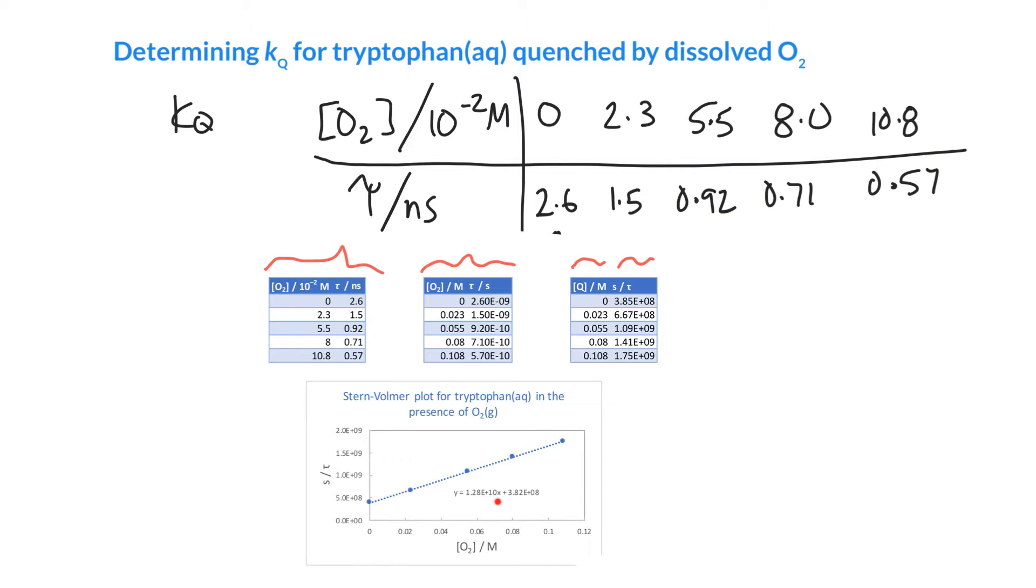My equation for the straight line is 1.28 × 10¹⁰. One problem with Excel is it doesn't keep track of units. We know the units are not dimensionless. So kq is 1.28 × 10¹⁰. We've got units of change in y over change in x. We have 1 over lifetimes, so 1 over seconds, divided by change in concentration, which is molarity. So it's molarity⁻¹ seconds⁻¹, or decimeters cubed per mole per second. To give you a feel, this is a pretty damn fast rate constant with 10¹⁰. This quenching reaction is happening very rapidly indeed.